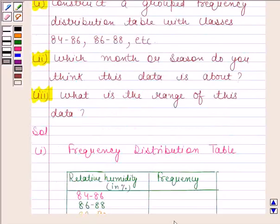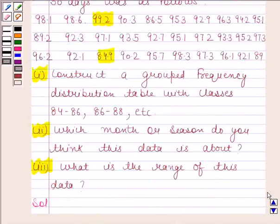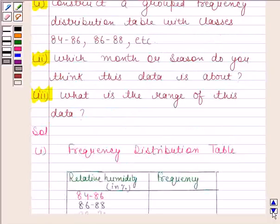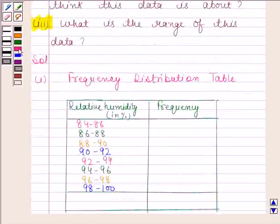Now we will fill the frequency column. We know that frequency means the number of times an observation occurs in a given data. Now look at the interval. Our first interval is 84 to 86. Only 84.9 is covered in this interval. So frequency for the interval 84 to 86 is 1.